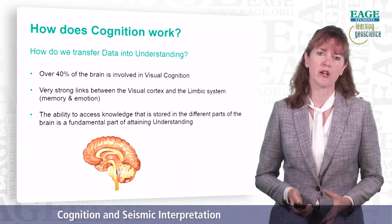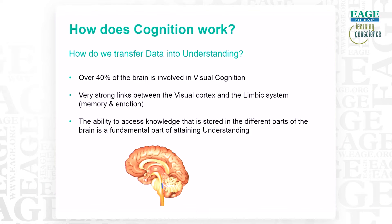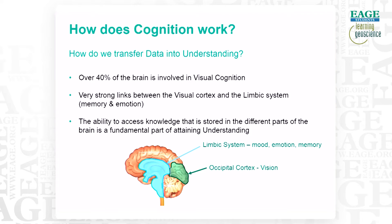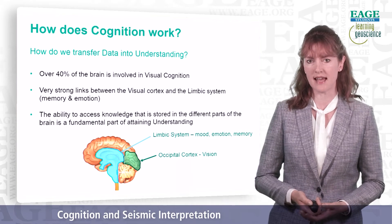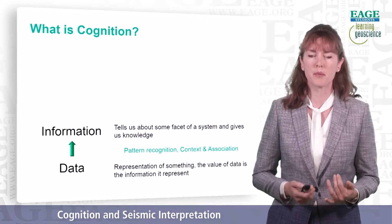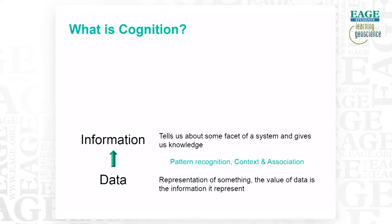So how does cognition work? How do we actually transfer data into understanding? Over 40% of the brain is involved in visual cognition, and there are really strong links between the visual cortex at the back of the brain and the limbic system, which is involved in memory, emotion, and mood. The process by which we transfer data into information is through pattern recognition, through context, and through association.